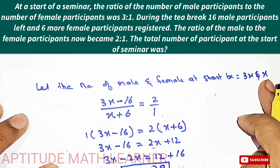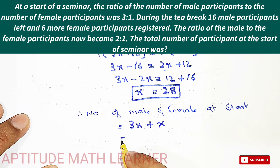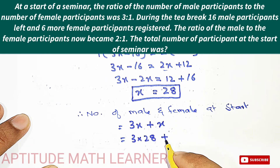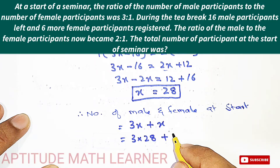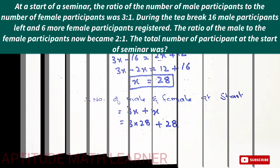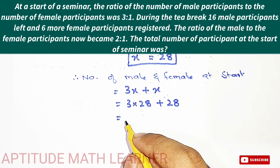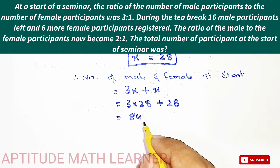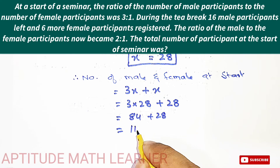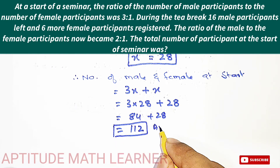Substituting x equals 28: the number of males at start is 3 multiplied by 28 equals 84, and the number of females at start is 28. So the total is 84 plus 28, which gives us 112 participants. This is our answer.